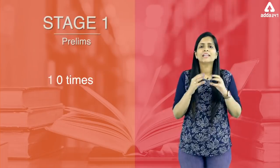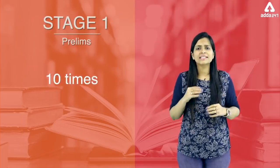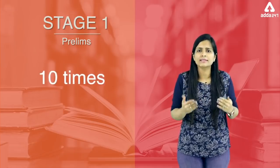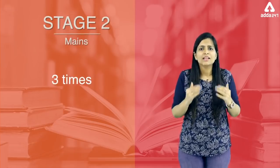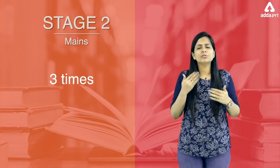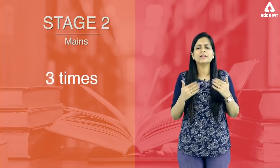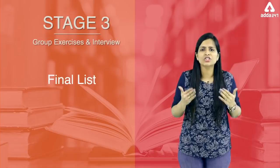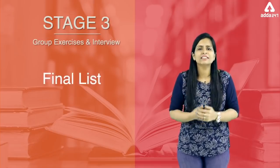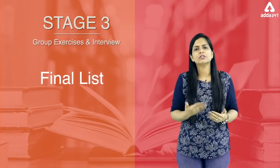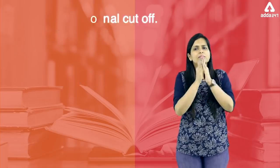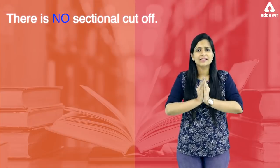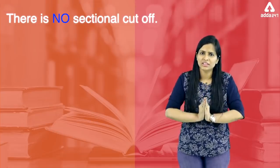In prelims, the number of students selected are 10 times the number of vacancies. After the main exams, the number of students selected are three times the number of vacancies, and after the group discussion and interview, we get the final list of selected students. There is no sectional cut-off in any section in the prelims and mains examination.